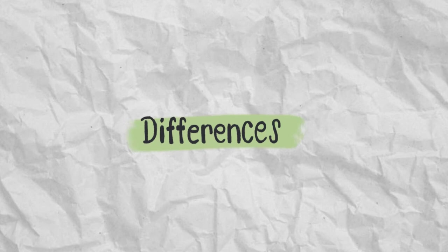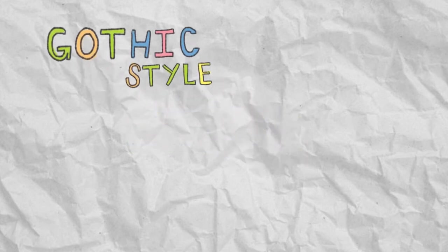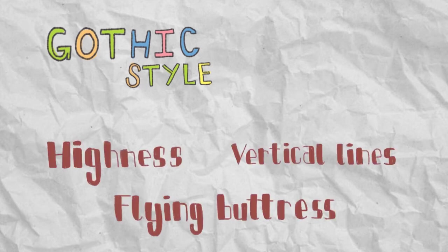Gothic architecture are focused on height and light, despite being constructed from heavy stones. Of course, they do have their differences too. For Gothic style, they have three main characteristics, which makes it distinct. It's known for its highness, vertical lines, and flying buttresses.